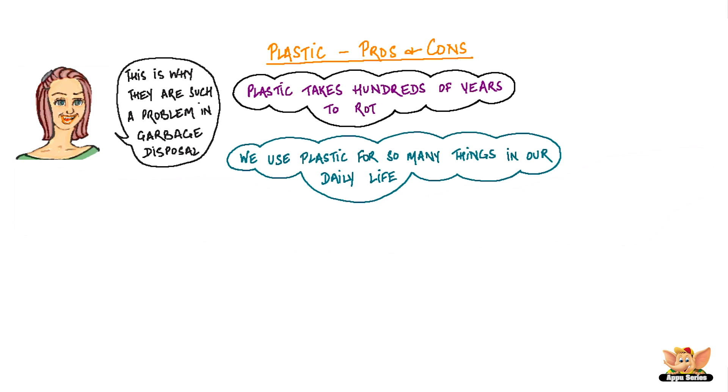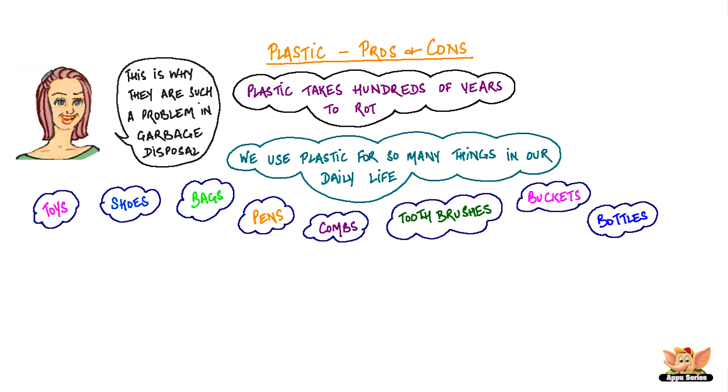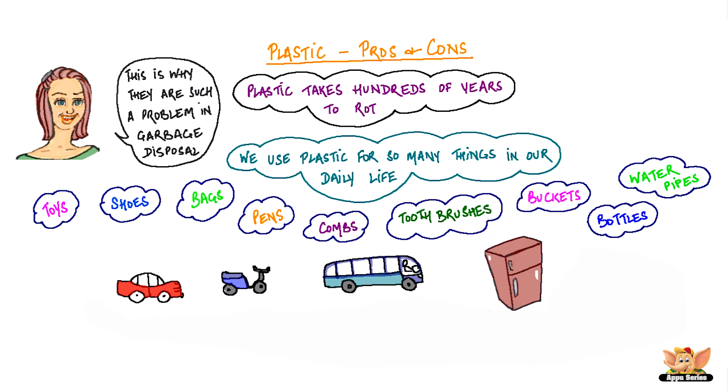We use plastic for so many things in our daily life: toys, shoes, bags, pens, combs, toothbrushes, buckets, bottles, water pipes, and even parts of cars, scooters, buses, refrigerators, and televisions are all made of plastic.